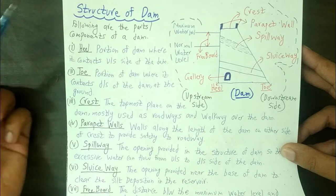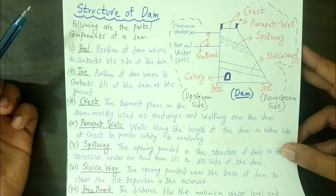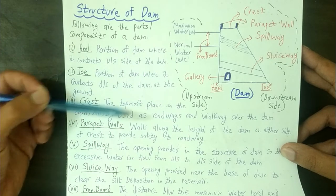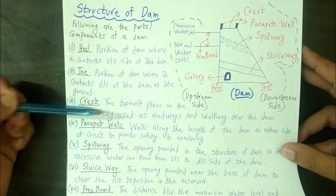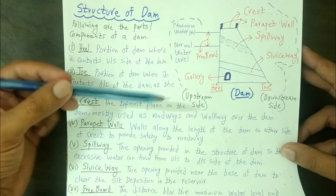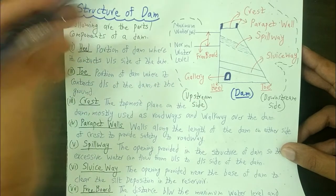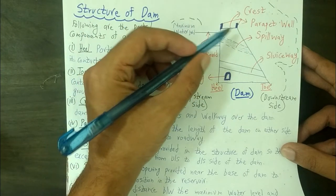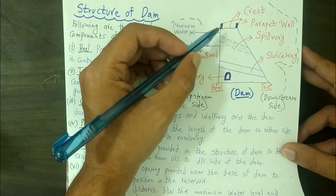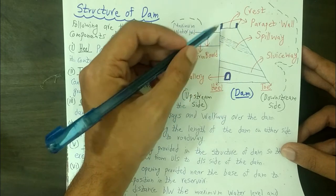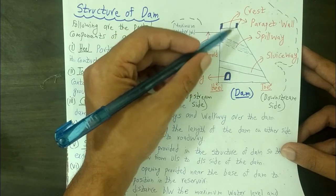Next we will study about the crest. The crest is the topmost plane on the dam, mostly used as roadways and walkways over the dam. This is our crest — this is the topmost part of the dam.